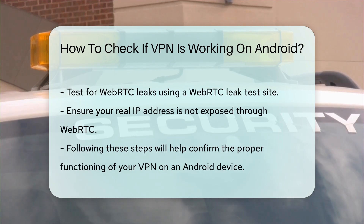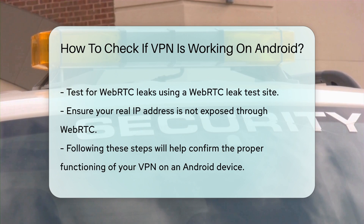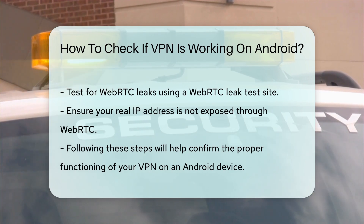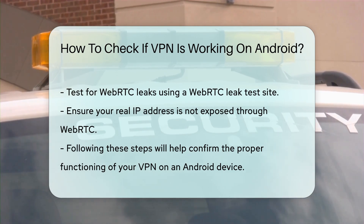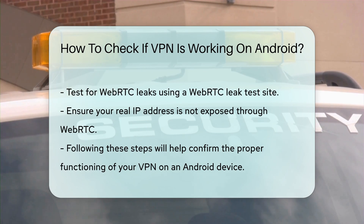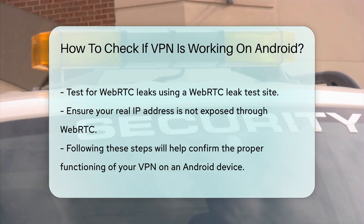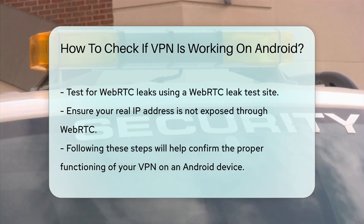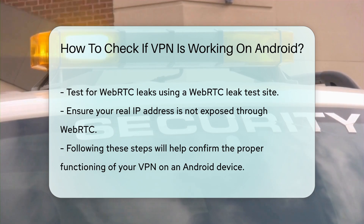Finally, check for WebRTC leaks. Some browsers may expose your real IP address through WebRTC. Use a WebRTC leak test site to ensure your actual IP is not visible. By following these steps, you can effectively confirm that your VPN is working as intended on your Android device.